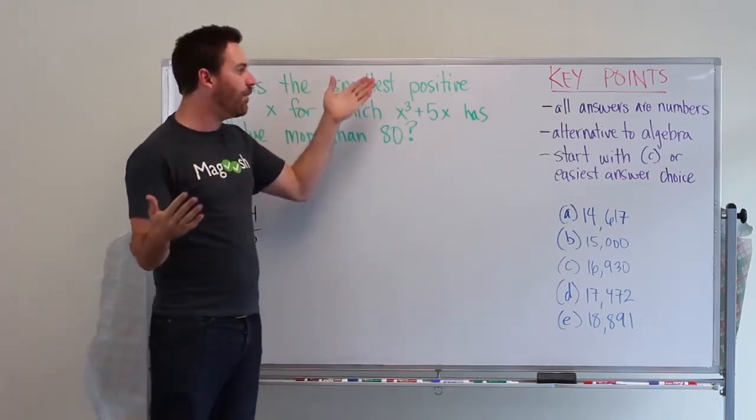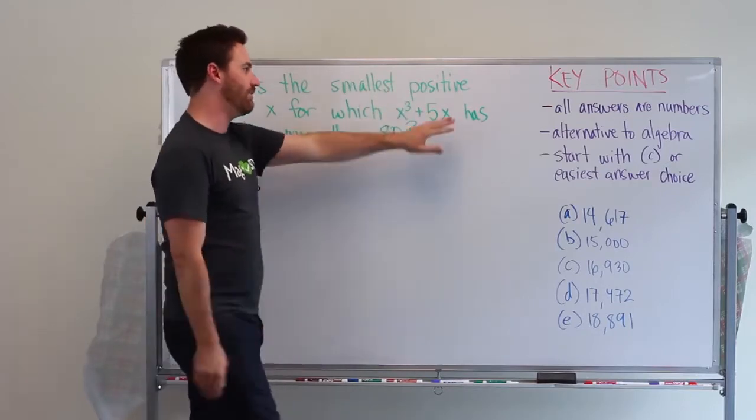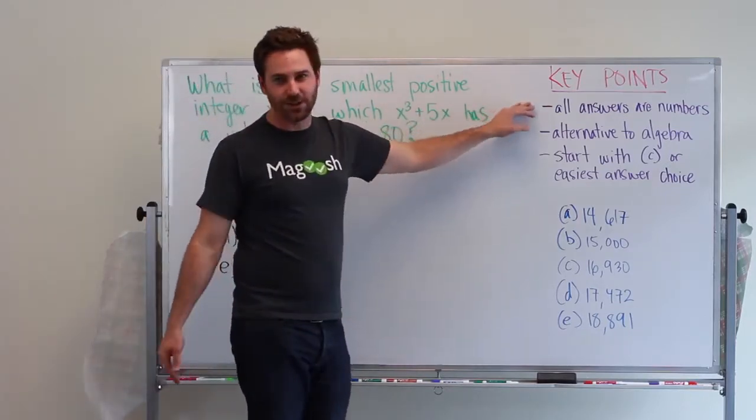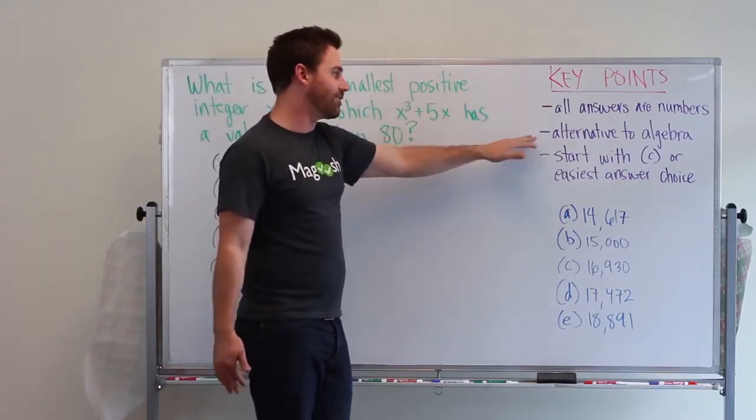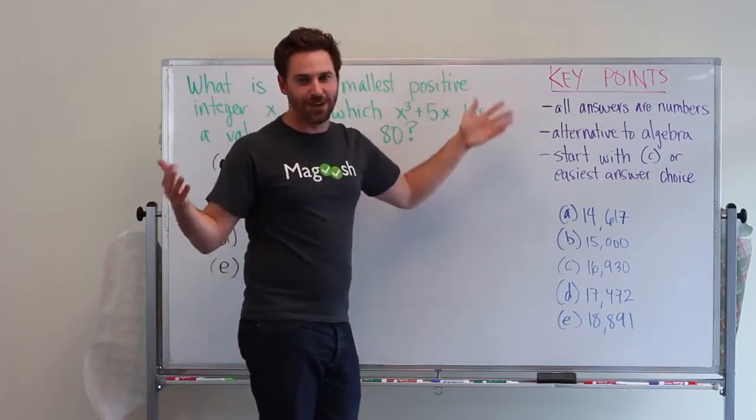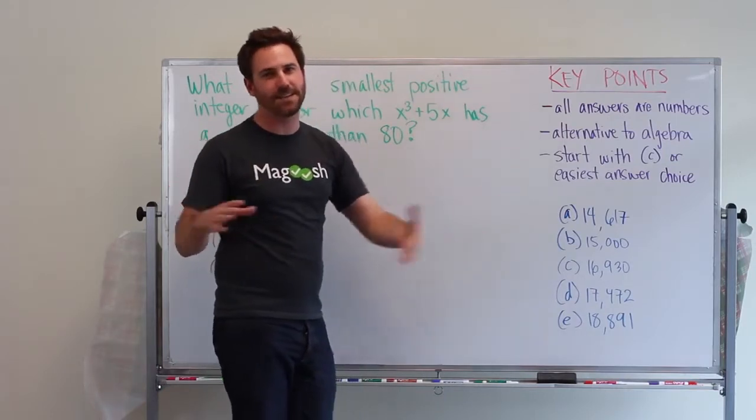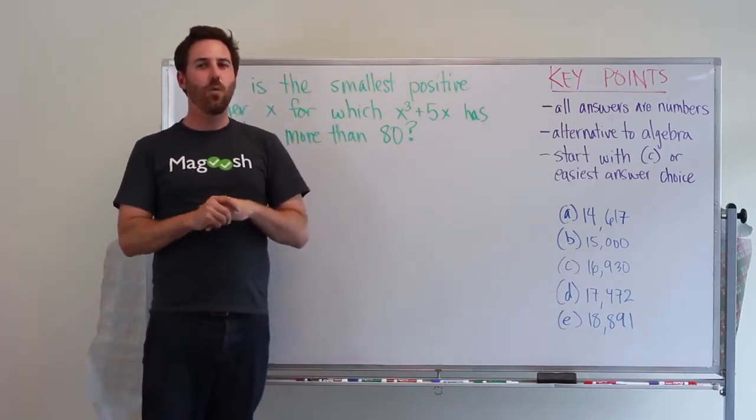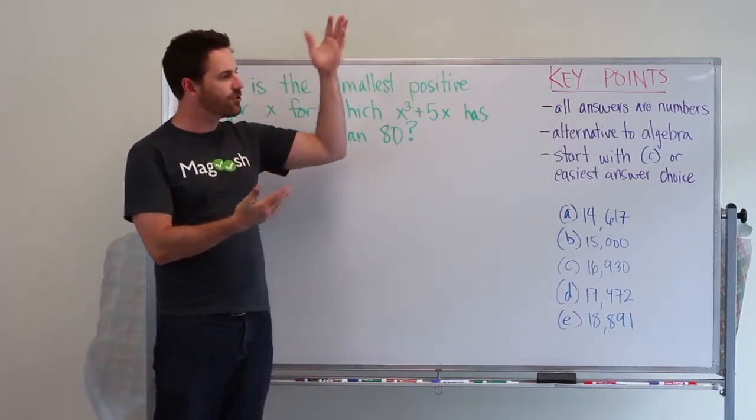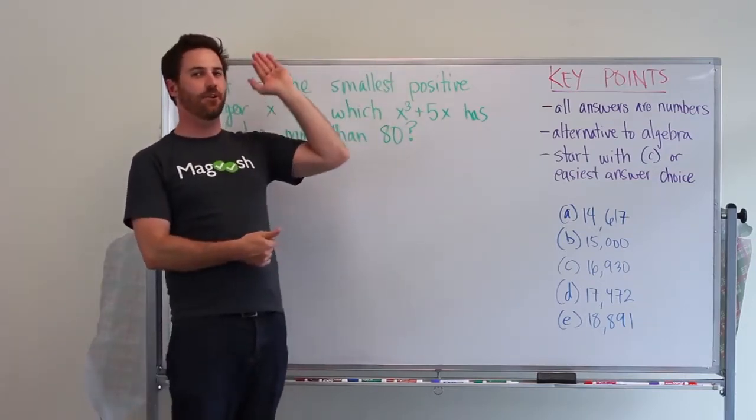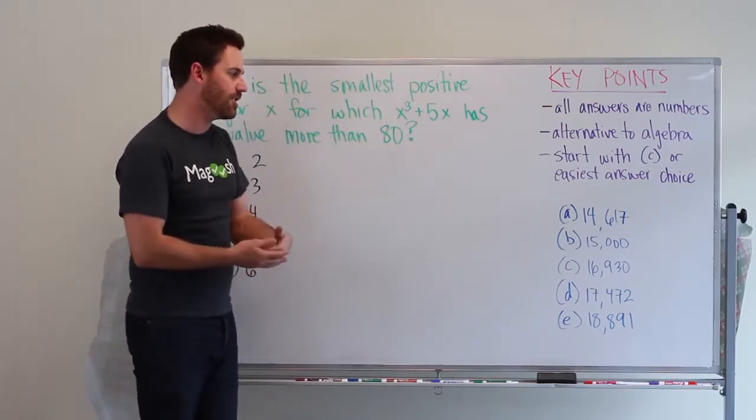So the key points to back solving are: all answers are numbers, this is an alternative to algebra, and start with C. C is the best answer to start with because answer choices on the GMAT are listed from smallest to largest.